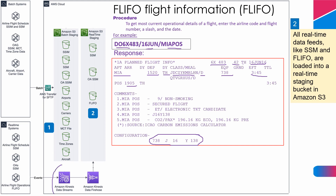To collect this real-time data, we can use Kinesis Data Streams. Kinesis Data Streams are used to collect and process large streams of data records in real-time. Kinesis Firehose is for delivering real-time streaming data to destinations such as Amazon S3, Redshift, or Elastic Search Service. By using Kinesis Data Streams and Kinesis Data Firehose, we collect all real-time data feeds like SSIM and FLIFOR, and load them into batch processing and real-time staging buckets in Amazon S3.